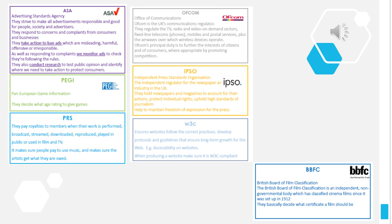The PRS looks after royalties for music. If you want to include music in your production, you need to contact the PRS and pay them to use the music. The PRS makes sure that everybody gets what they are owed — so if you make a song and it gets used in a film, you need to get paid for that.